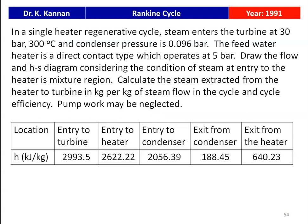The next question is from the 1991 question paper. In a single-heater regenerative cycle, steam enters the turbine at 30 bar, 300°C, and condenser pressure is 0.096 bar. The feed water heater is a direct-contact type operating at 5 bar. We are asked to draw the flow and H-S diagram, calculate the steam extracted from the turbine per kg of steam flowing in the cycle, and find the cycle efficiency — with pump work neglected. The given enthalpies are: H1 (turbine entry) = 2993.5 kJ/kg, H2 (heater entry) = 2622.22 kJ/kg, H3 (condenser entry) = 2056.39 kJ/kg, H4 (condenser exit) = 188.45 kJ/kg, H6 (heater exit) = 640.23 kJ/kg.